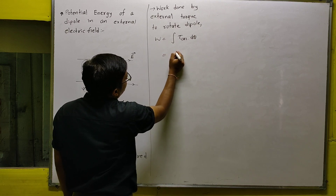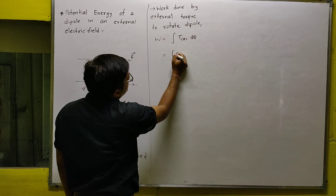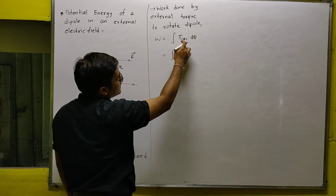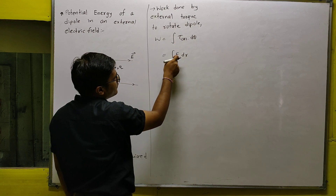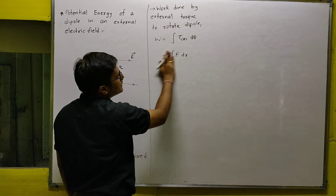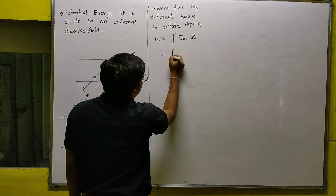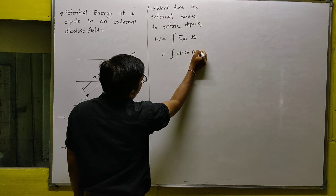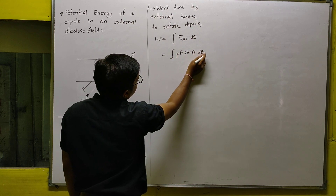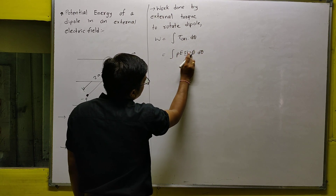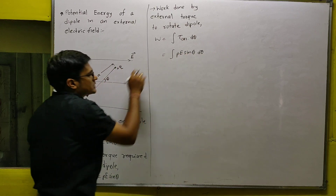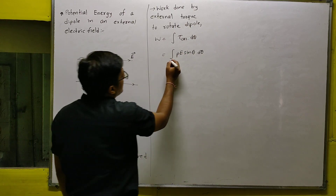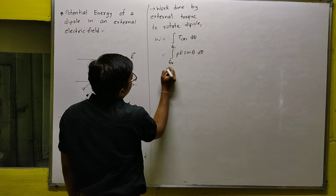Just like we use the formula force times displacement, here we use torque for the angular case — angular displacement replaces linear displacement. So the external torque equals PE sinθ dθ. This dθ indicates you have to integrate sinθ and substitute the limits θ₀ to θ₁.